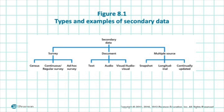For the second category, document includes everything that is documented. It can include documents in terms of text, audio, or both visual and audio-visual. The final category is multiple source, which includes snapshot, longitudinal, report data or continually updated data. These types of data are usually ongoing research that is always updated by the researchers.